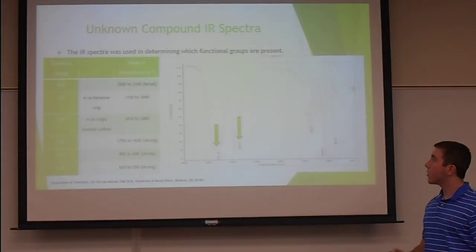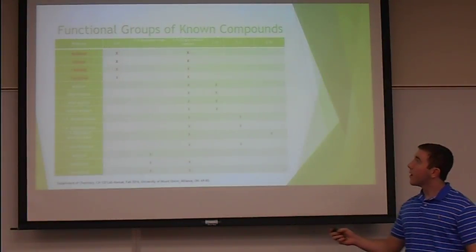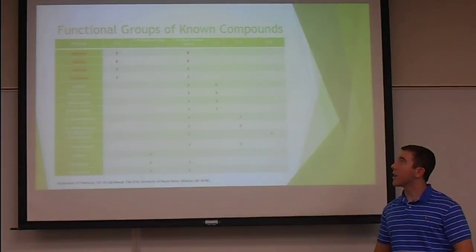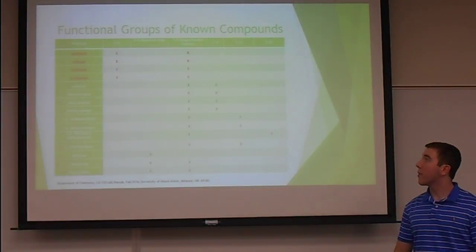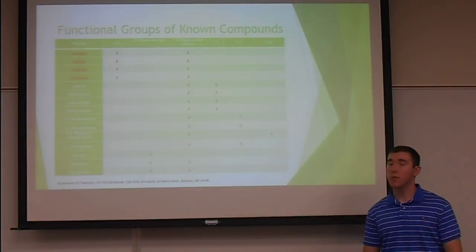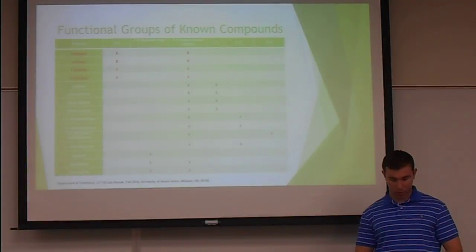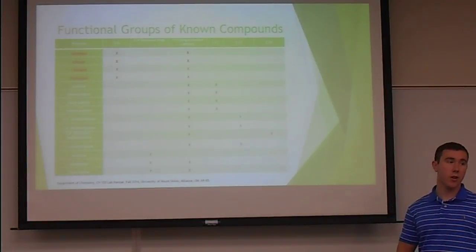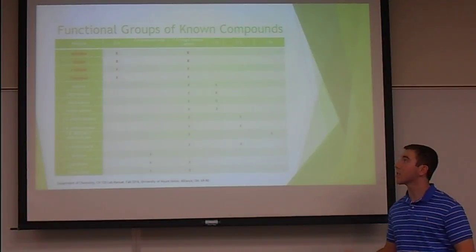We can see that the only compounds with both an OH and a CH singly bonded carbon are methanol, ethanol, tbutanol, and 2-propanol. But to completely narrow this down and determine the compound, we will use NMR techniques.